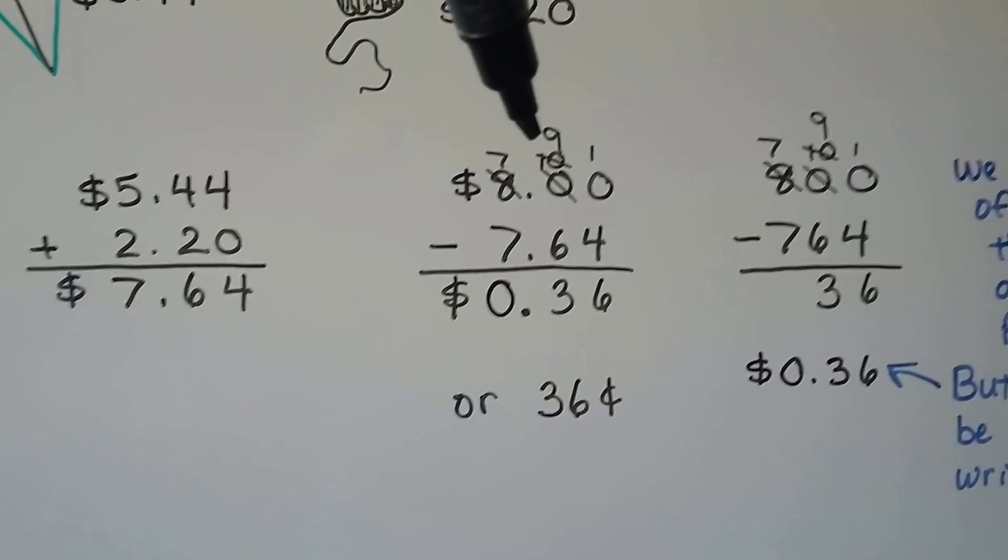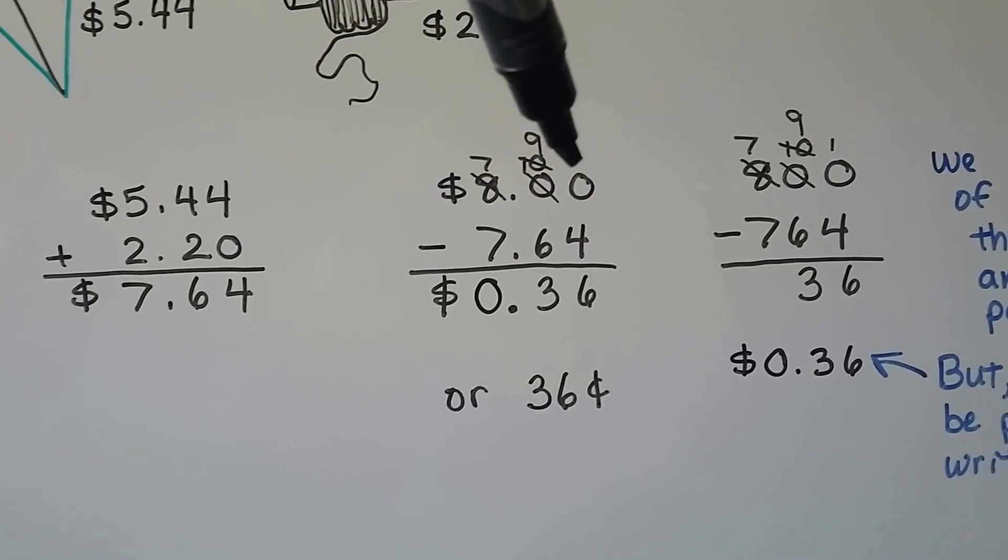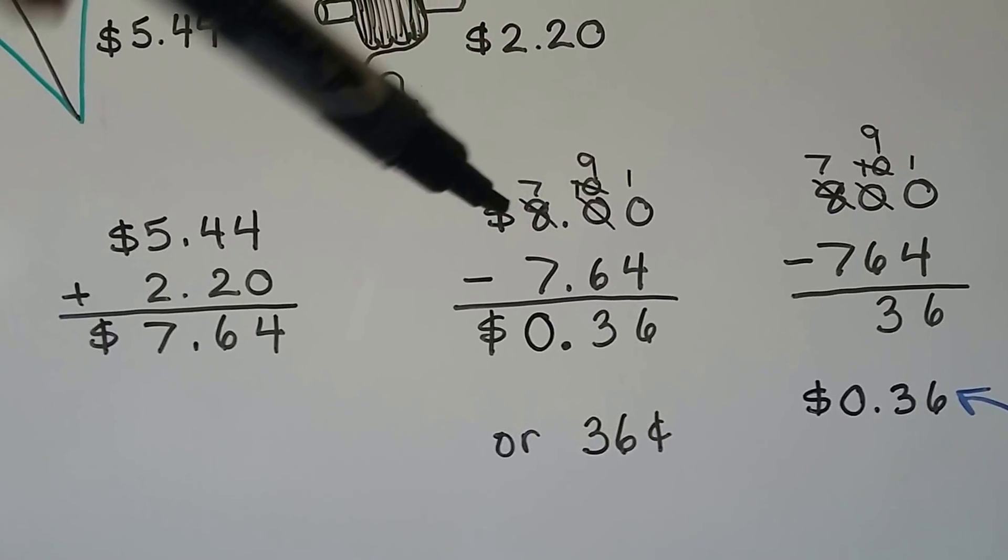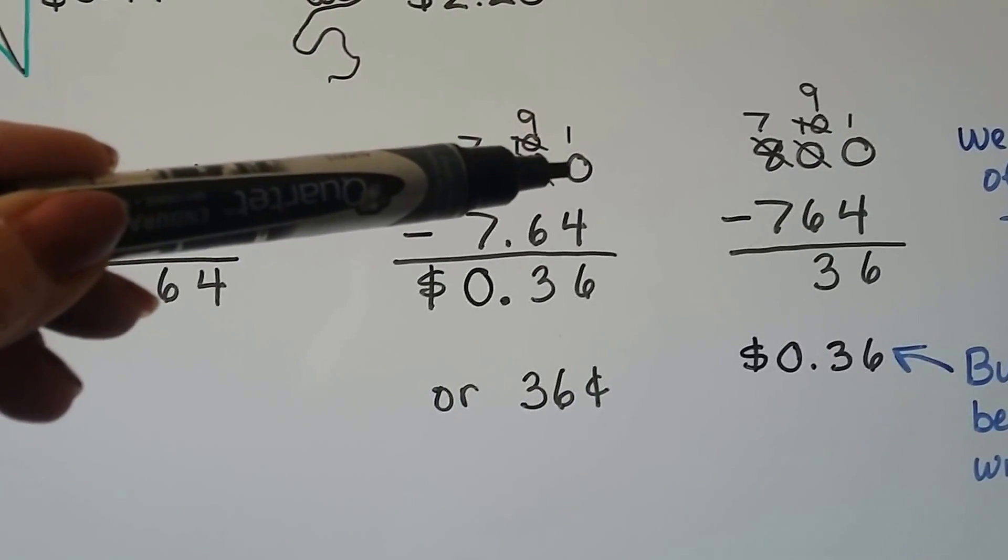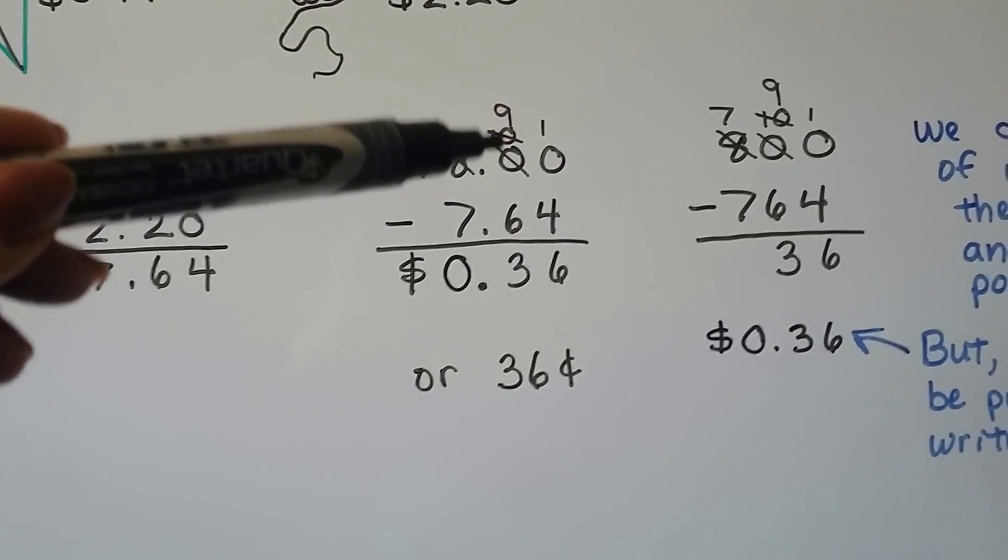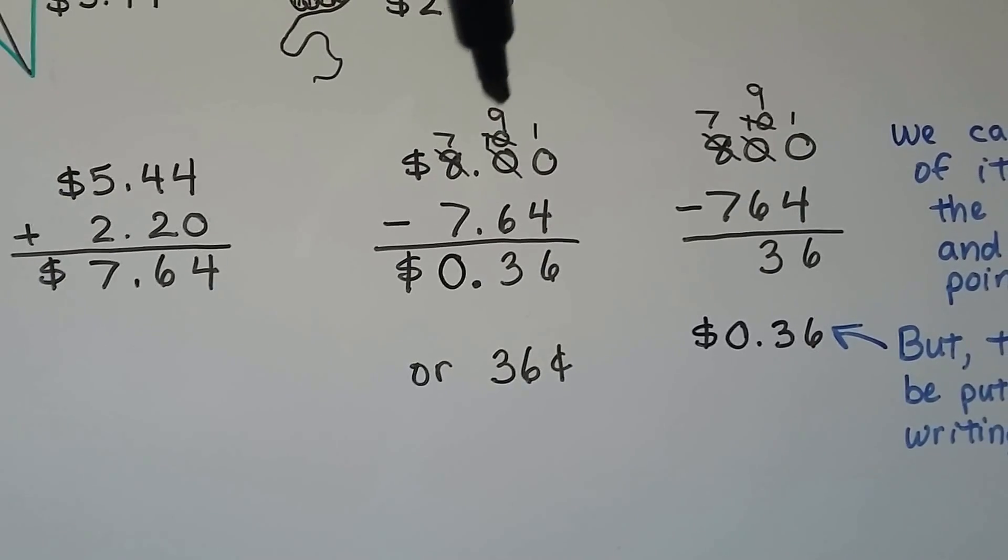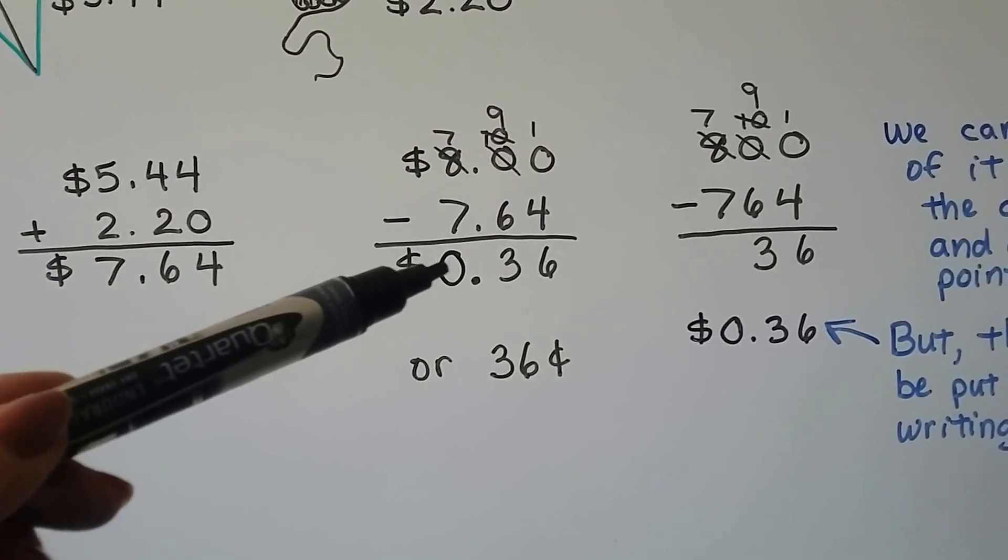So, we have to regroup because we can't take 4 from 0. The 8 is going to become a 7. Then, this 0 is going to become a 10. And then, this 0 can borrow 1 from that 10, so it becomes a 9, and now that becomes a 10. 10 take away 4 is 6. 9 take away 6 is 3. 7 take away 7 is 0.